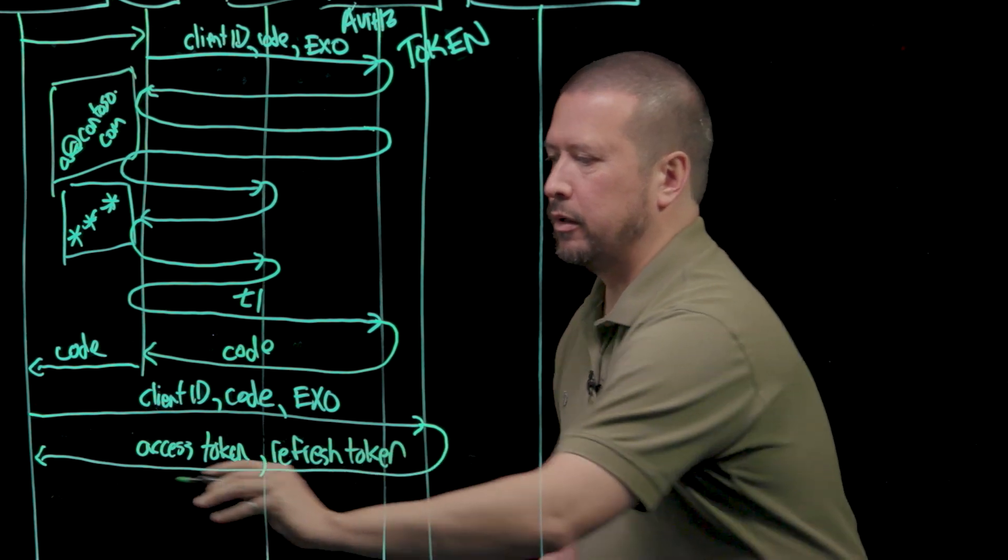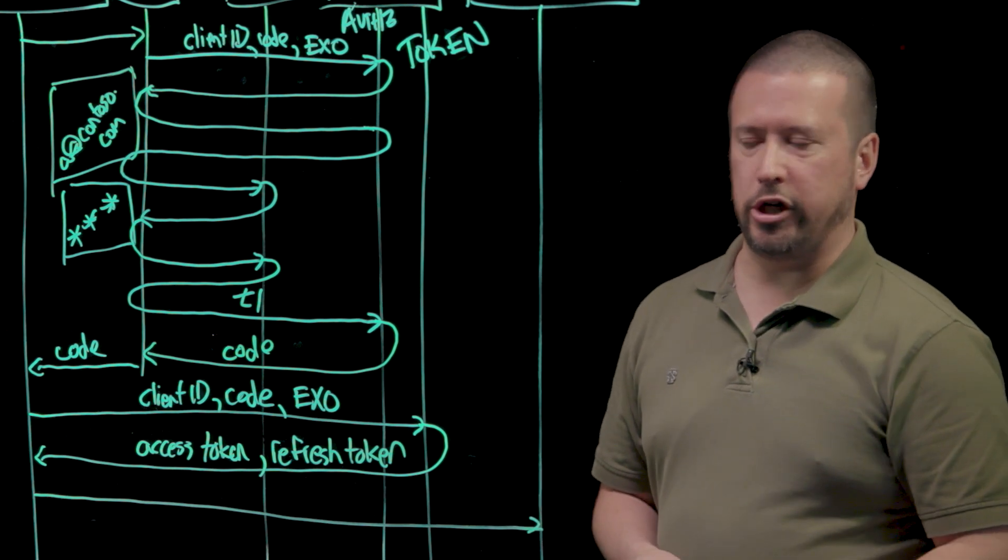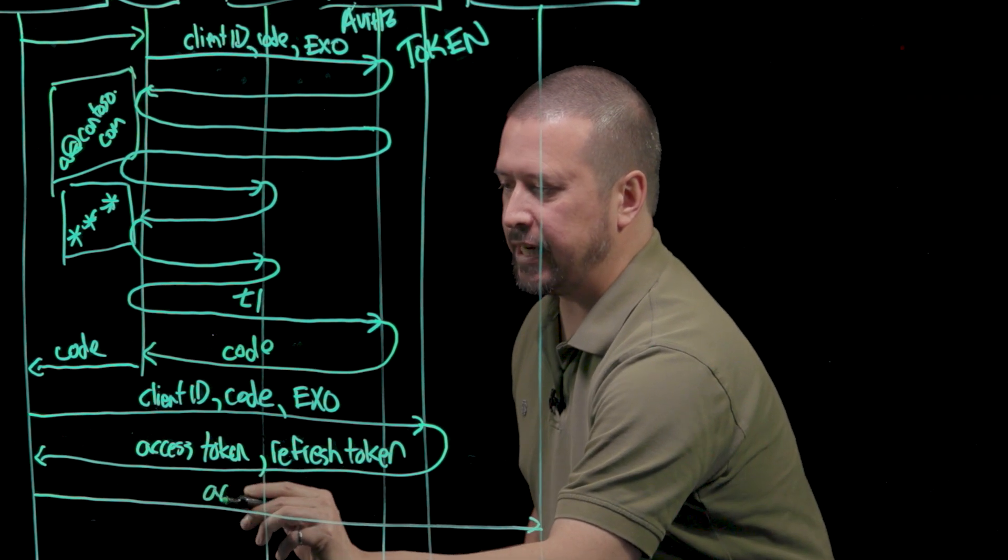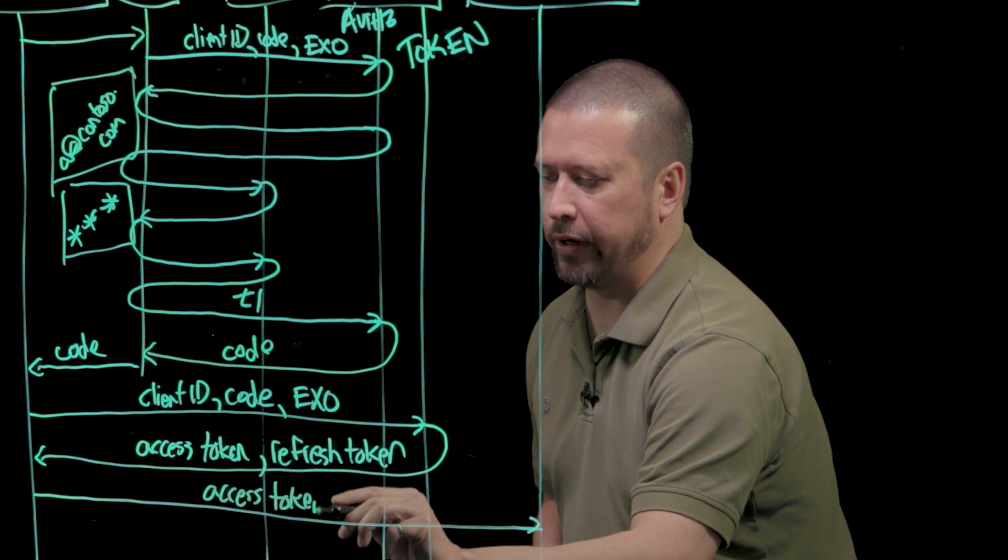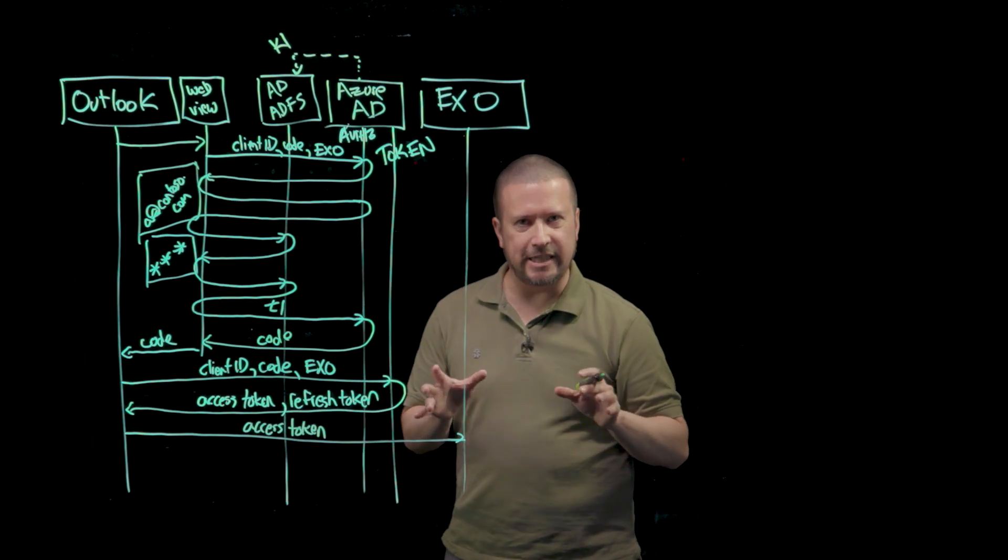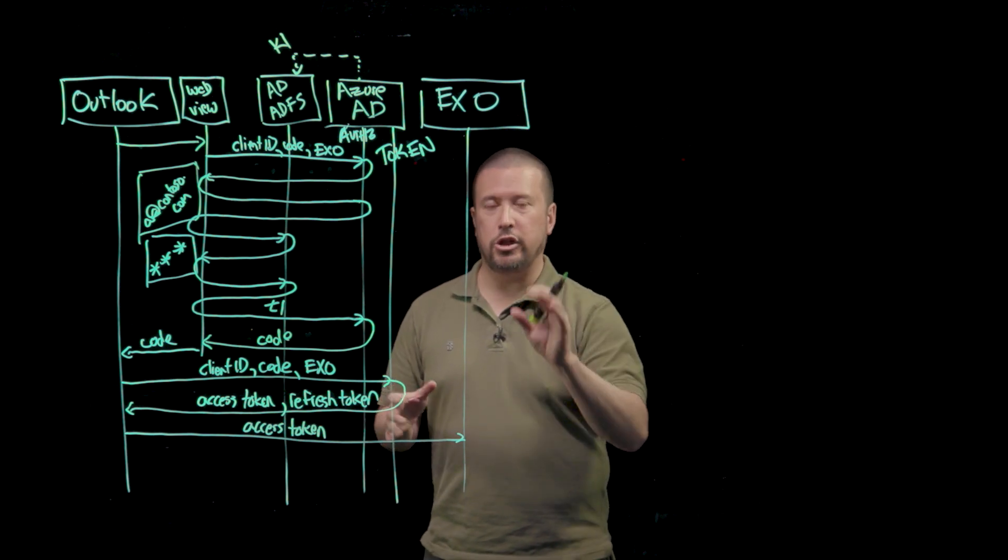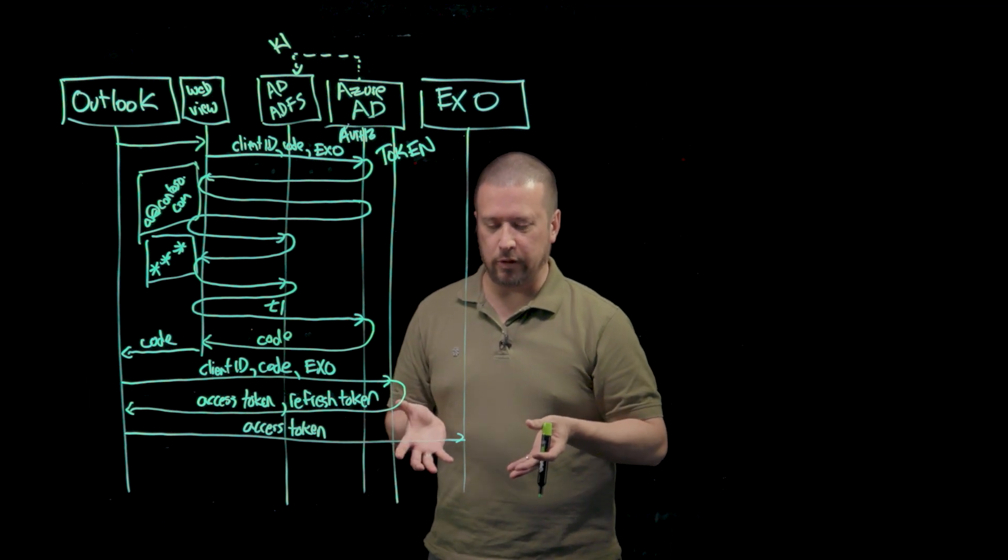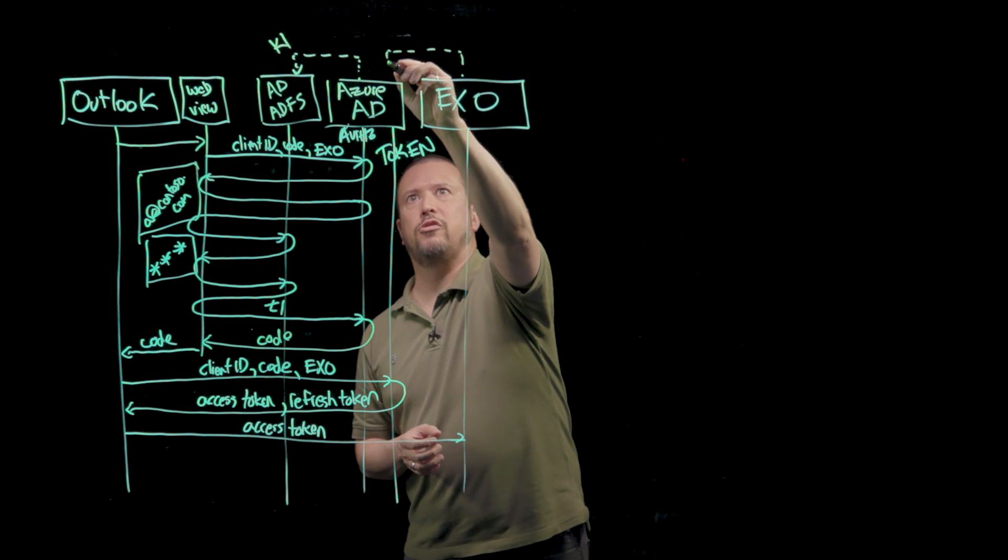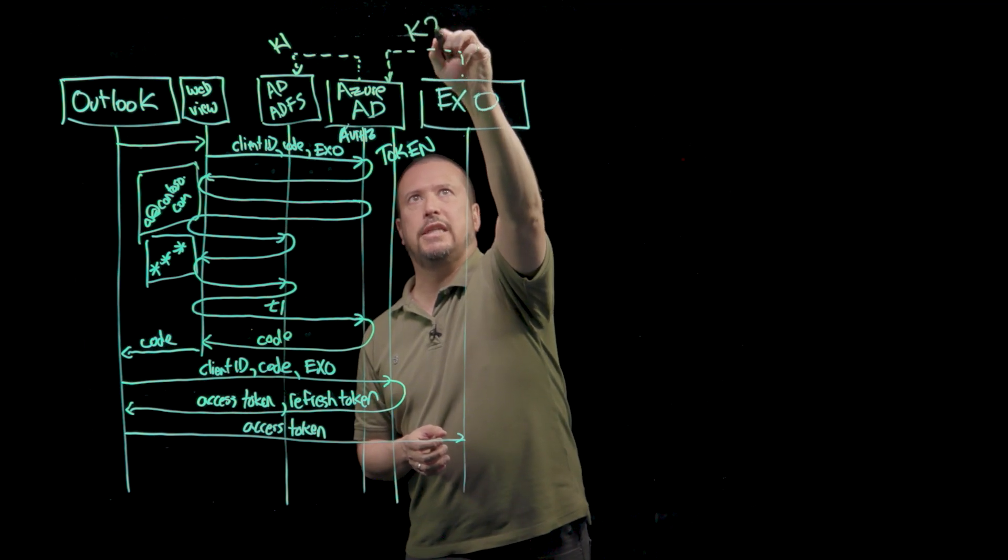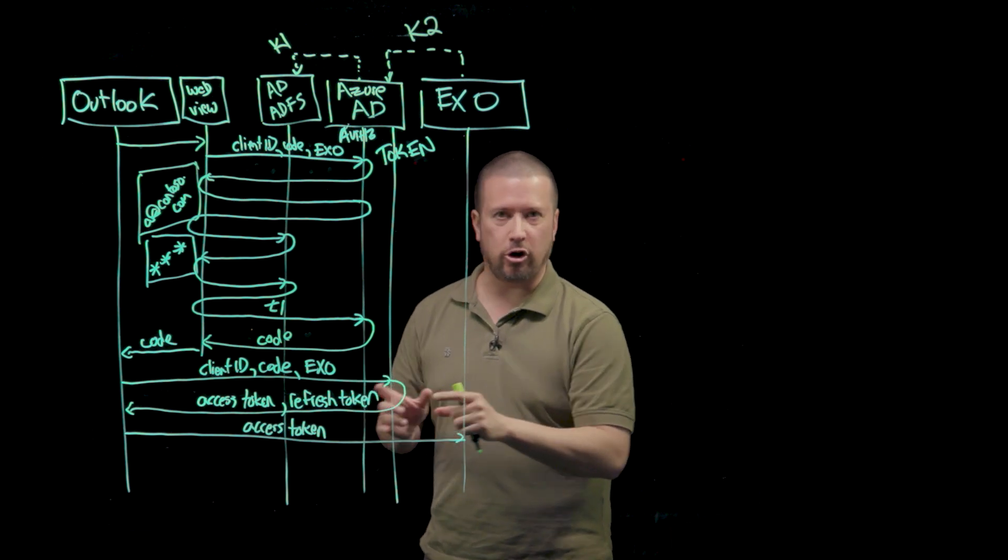It's the access token that Outlook is finally going to use when it makes calls to Exchange Online. It's going to send that access token on every request it makes to the REST endpoint of Exchange Online in what's called the authorization header of each request. Exchange Online knows to lift that token out of the authorization header, and by virtue of the fact that it trusts Azure AD and knows Azure AD's signing key, it can validate the signature on the access token.